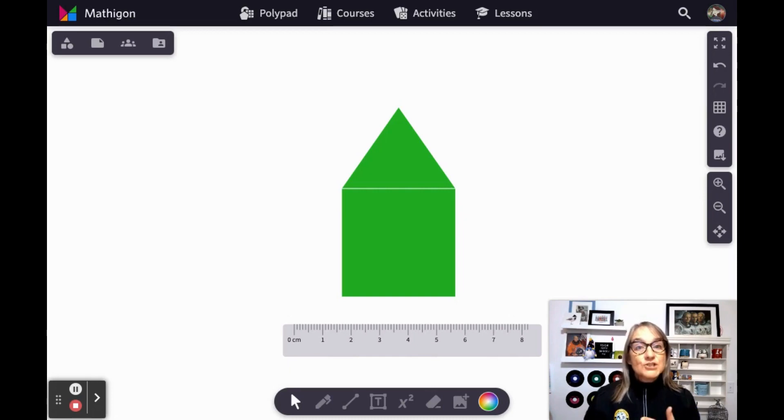For example, this house shape is made up of a square and a triangle. To find the area of the house, all we need to do is find the area of the square and the area of the triangle and then add them both together. Let's do it right now.